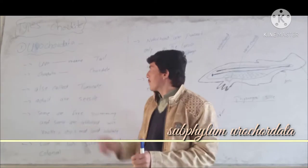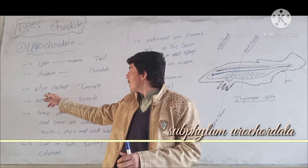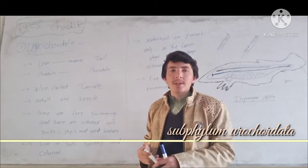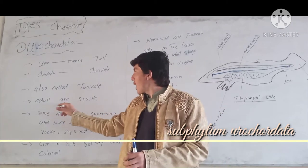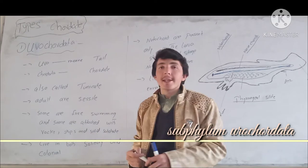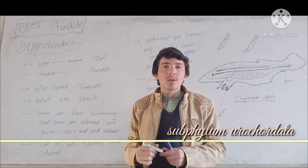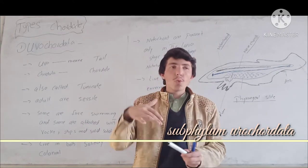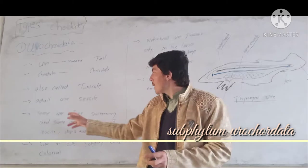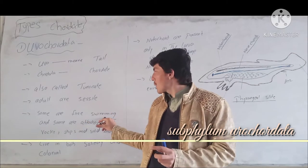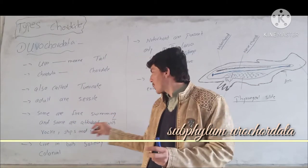Urochordata. The adult is a sessile cell — sessile means not moving. You know it is the standard of this group. They can start moving. Front larvae and center are free-swimming specialists.